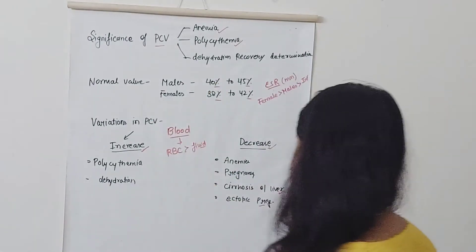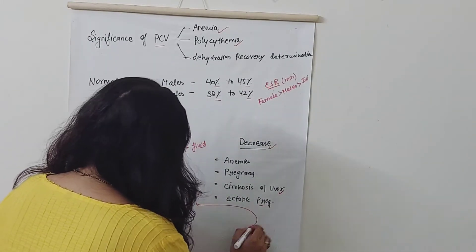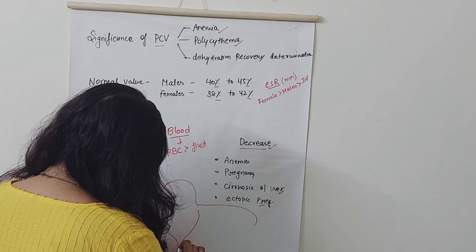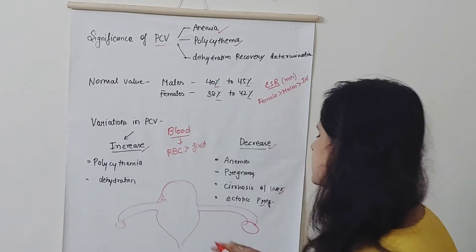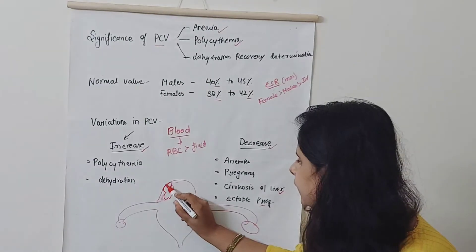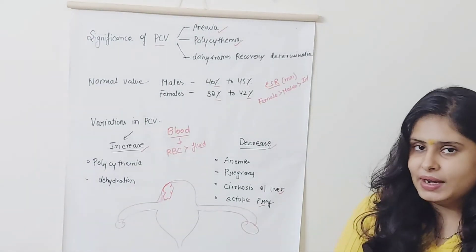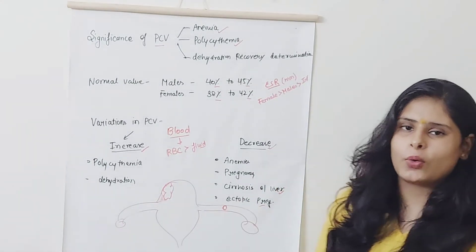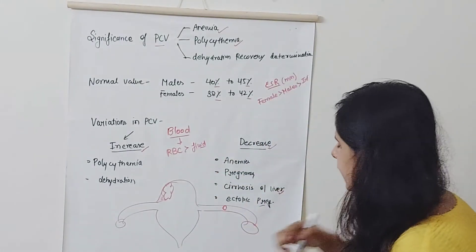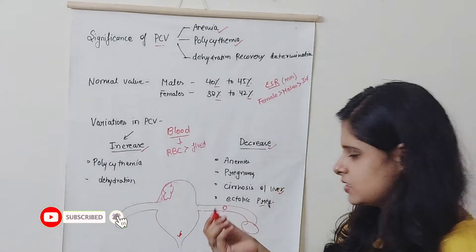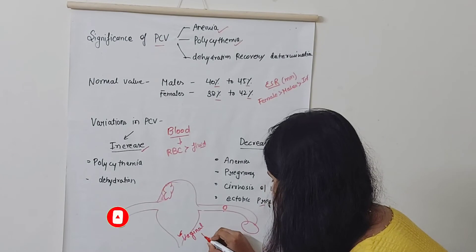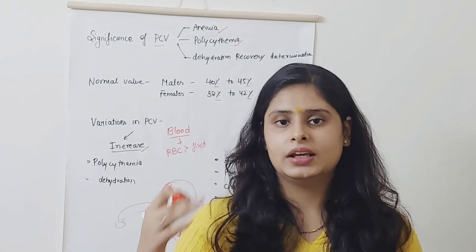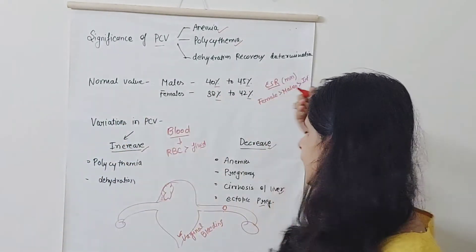In ectopic pregnancy, there is not enough space for the embryo to grow, so it ruptures. This causes vaginal bleeding. The patient reports vaginal bleeding, which means the body is losing blood. This blood loss leads to anemia, and anemia leads to a decrease in PCV. So ectopic pregnancy is another cause of decreased PCV.